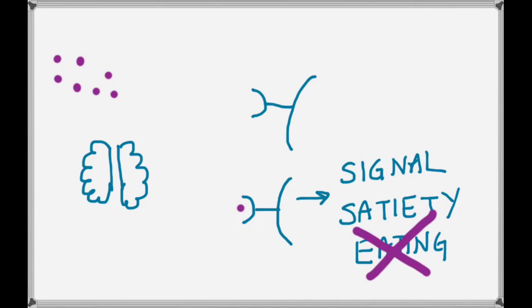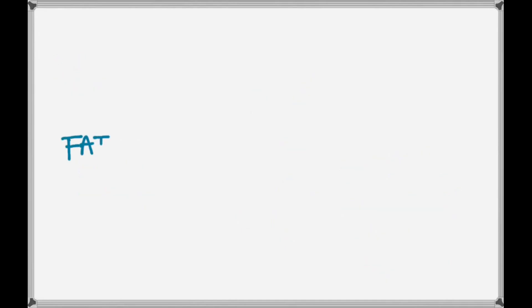So let's put this together to see how, in normal circumstances, leptin keeps fat levels in a relatively narrow range in an organism. So we know that fat produces leptin. We know that leptin sends a satiety signal, and that this influences eating.